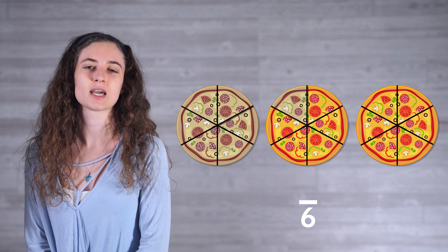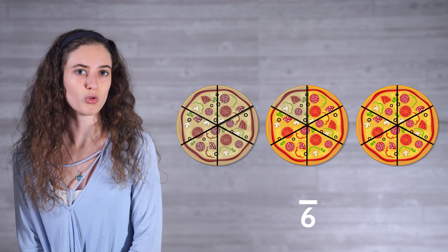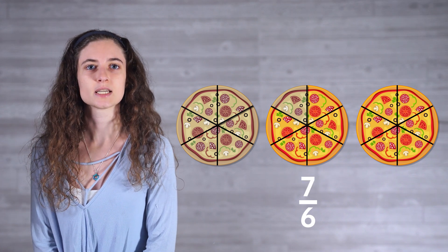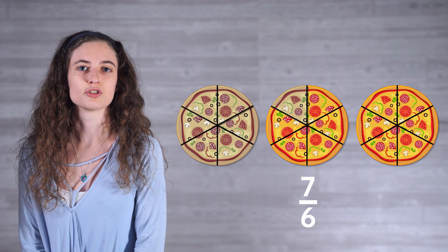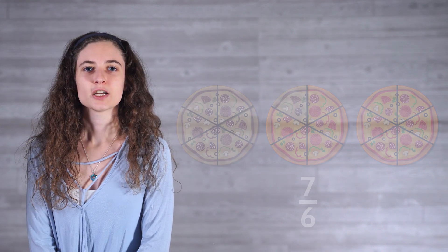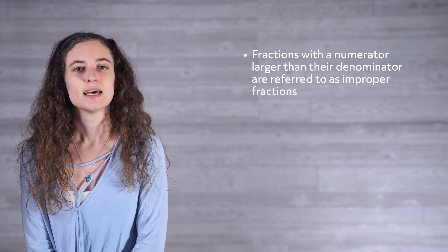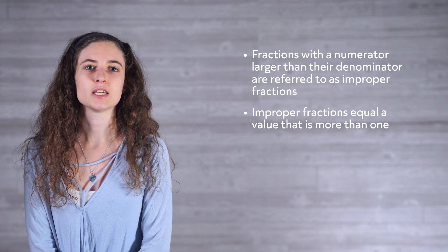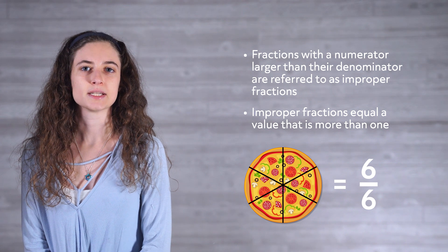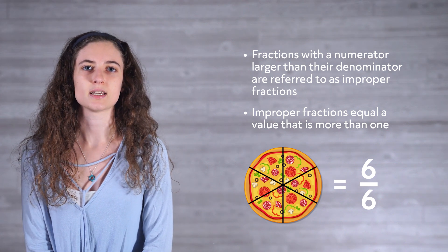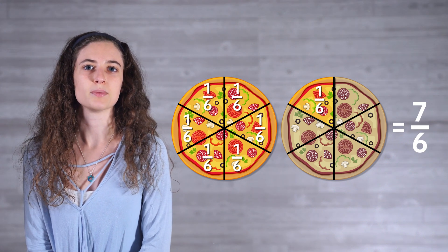But what if that first guest was really hungry and grabbed 7 slices? Each pizza was cut into 6 equal slices, so 6 remains as our whole, or denominator. But this time, our part is 7, so our numerator is larger than our denominator: 7 over 6. Fractions with a numerator larger than their denominator are referred to as improper fractions. Essentially, improper fractions equal a value that is more than 1.